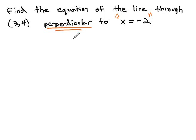To be perpendicular to an x equals equation, it would need to be y equals some number. We know we want it to also go through the point 3, comma 4.